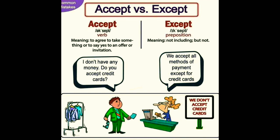Accept vs. Except. 'Accept' (A-C-C-E-P-T) is a verb meaning to agree to take something or to say yes to an offer or invitation. Example: I don't have any money — do you accept credit cards? 'Except' is a preposition meaning 'not including' or 'but not.' Example: We accept all methods of payment except for credit cards.